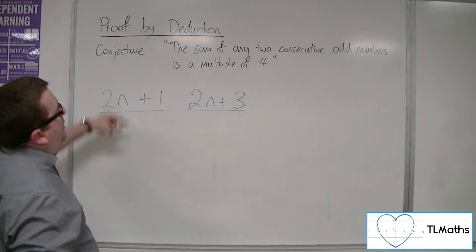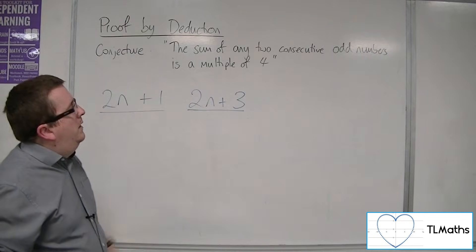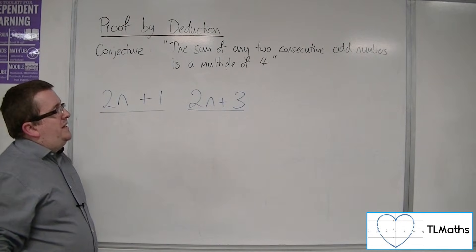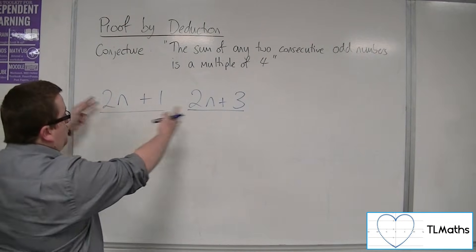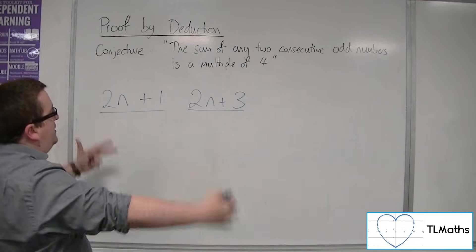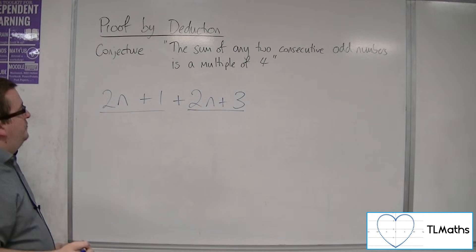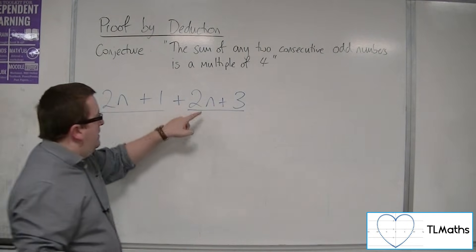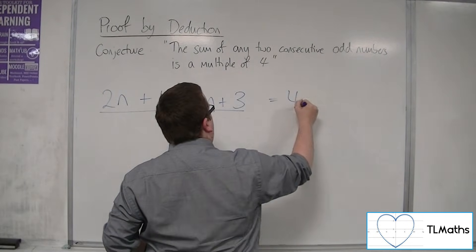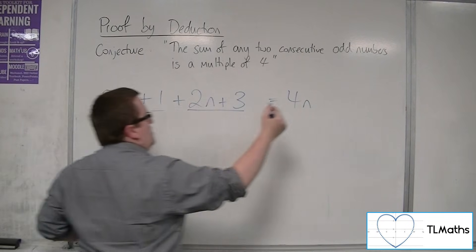The conjecture talks about the sum of any two consecutive odd numbers. So these represent any two consecutive odd numbers, and if it's the sum, I'm adding them together. I've got 2n and 2n, that makes 4n, and I've got the 1 and the 3, that makes 4.